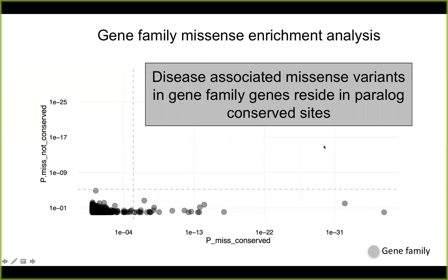This is what we did. On the x-axis you see the enrichment for gene families for the missense paralog-conserved test, and you see that many gene families are enriched. However, if we perform the same test for the same gene families but only considering de novo variants at non-paralog-conserved sites, we don't see any significant gene families. Based on this simple empirical test, we can conclude that disease-associated missense variants in gene family genes reside in paralog-conserved sites — which has not been empirically shown before.